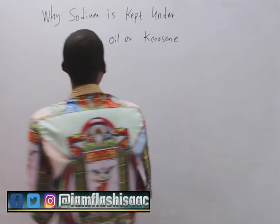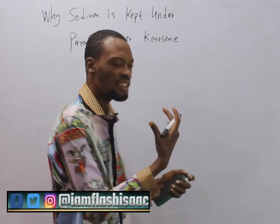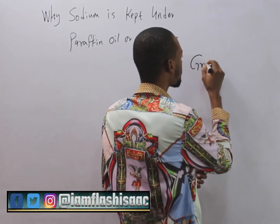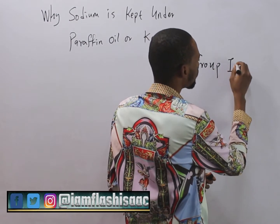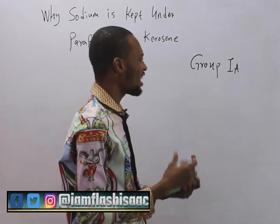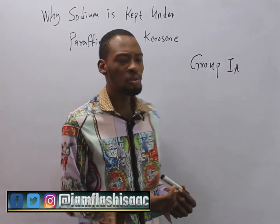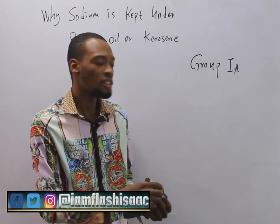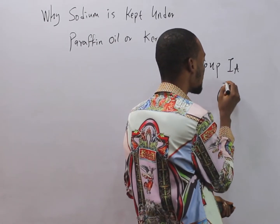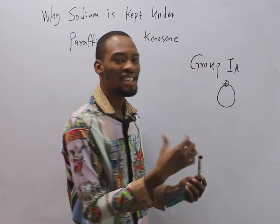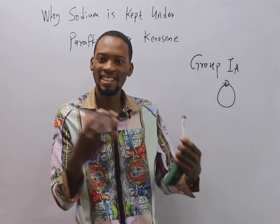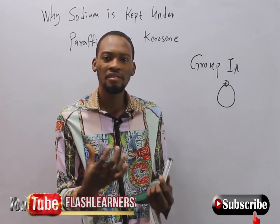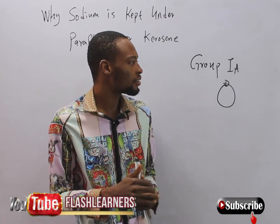Sodium is a very very reactive matter. Sodium belongs to group 1A in the periodic table. And like you already know, group 1A elements are very reactive because they have one electron in their outermost shell. It is very easy for them to give out that electron, so reactions of group 1A elements are very very rapid.